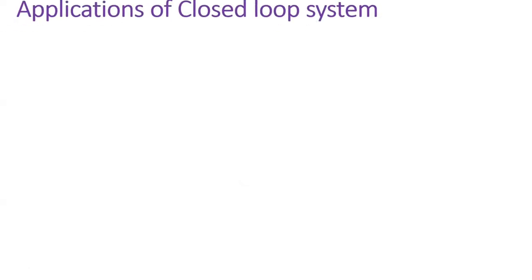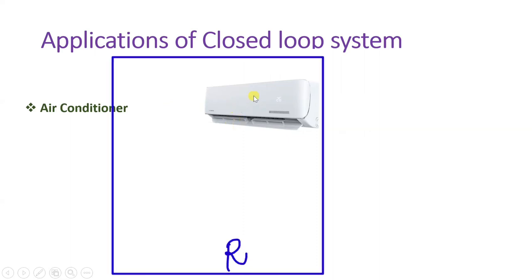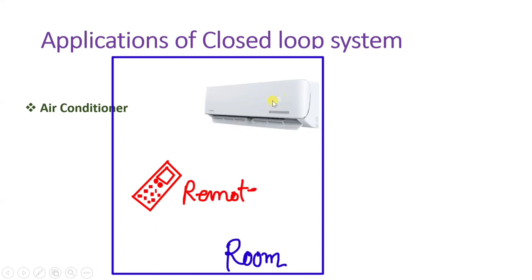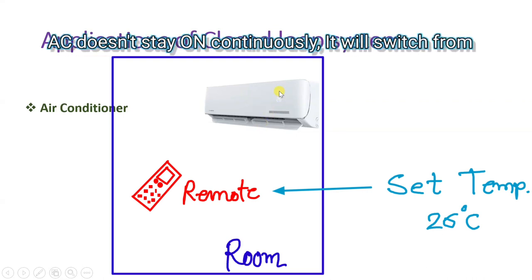Now let us look at the applications, which will further solidify your understanding. One major application is the air conditioner. In an air conditioner, we use a closed-loop system. For example, if we set the temperature to 26 degrees Celsius using the remote control, then once we set this temperature, the AC will turn on. Once it cools the room to 26 degrees Celsius, after reaching that temperature, it will turn off the AC.